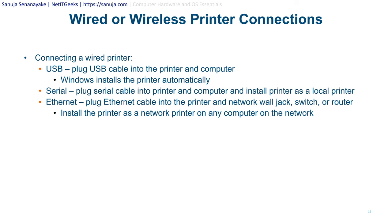For ethernet printers, plug the ethernet cable into the printer and a network wall jack, switch, or router, then install the printer as a network printer on any computer on the network. Some ethernet printers are not plug-and-play — you may need to refresh the DHCP connection so the printer obtains an IP address. I highly recommend assigning a static IP address to your network printer, following the manufacturer's recommendations for configuring it.